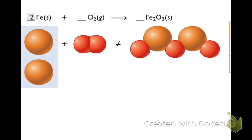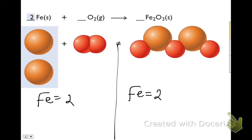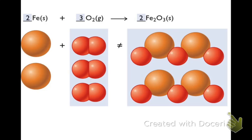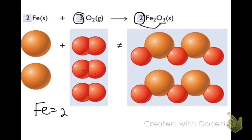I'll add coefficients in front of the equations. I add a 2 in front of Fe on the left, giving two irons on each side. Looking at oxygens, I have two on the left and three on the right — still need to make them equal. I add a 3 in front of O2, giving six oxygens on the left. On the right hand side I also have six oxygens. But now my irons aren't balanced — I have two irons on the left and four irons on the right.